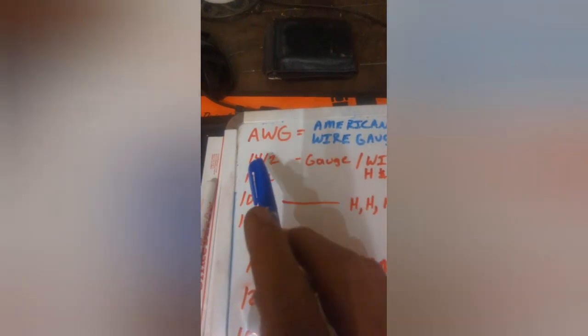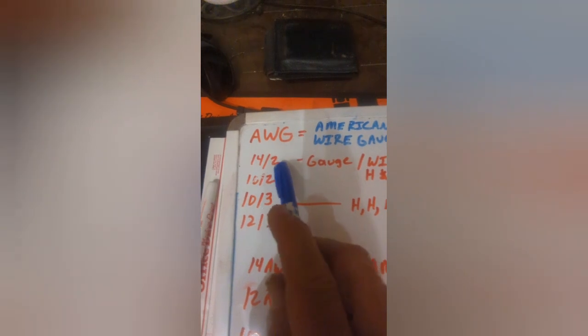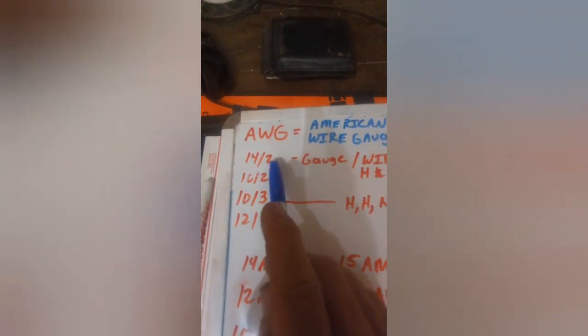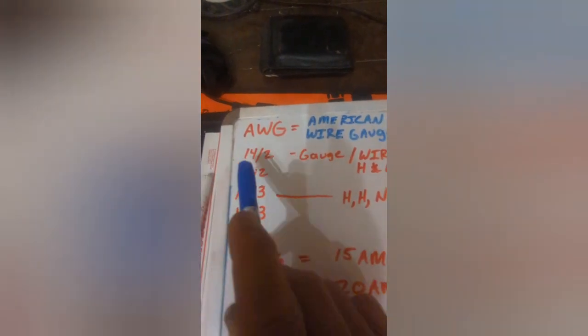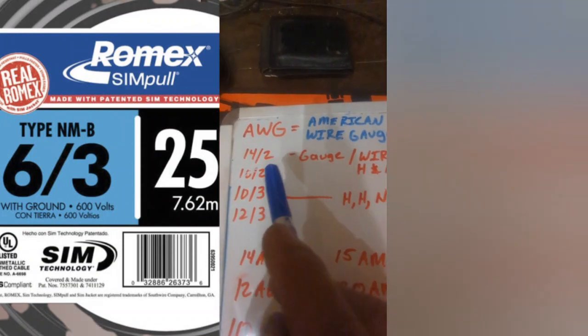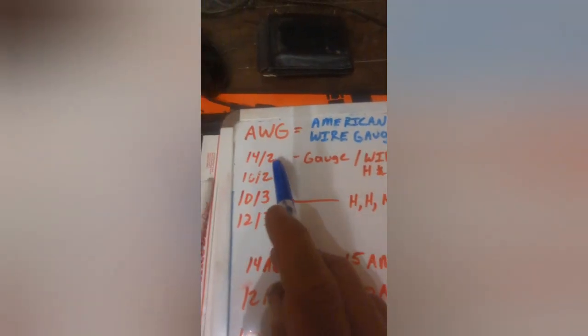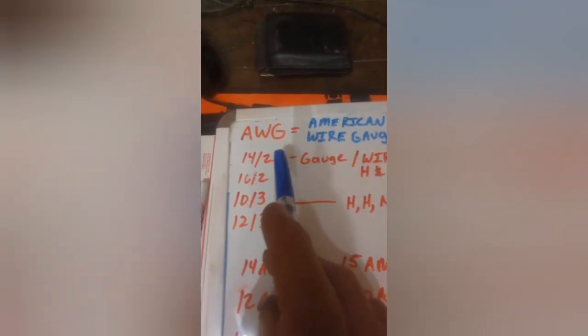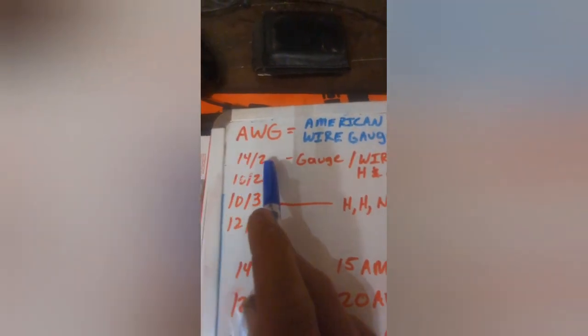So basically you see 14-2, what that's going to mean is there are two wires inside that are 14 gauge wires. Now this does not include the ground wire. You'll see ground written on the package. That'll say includes ground.